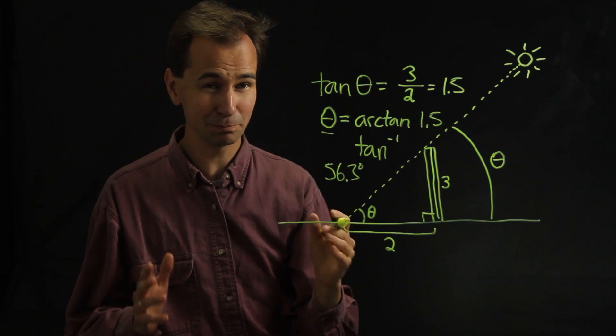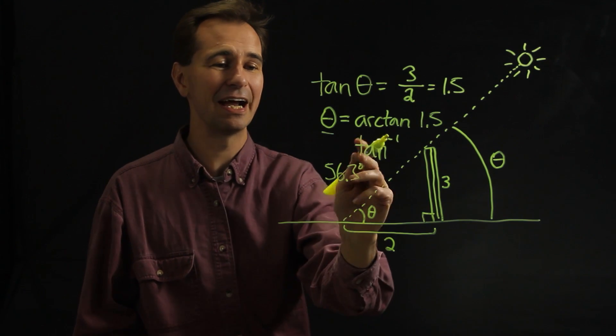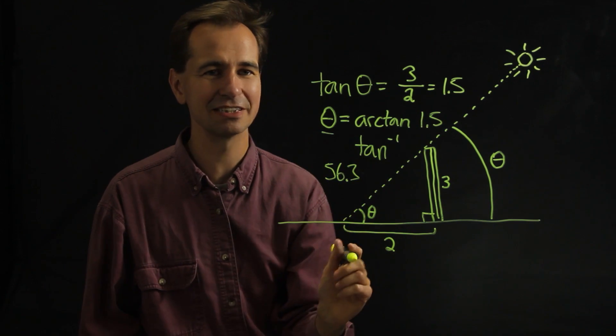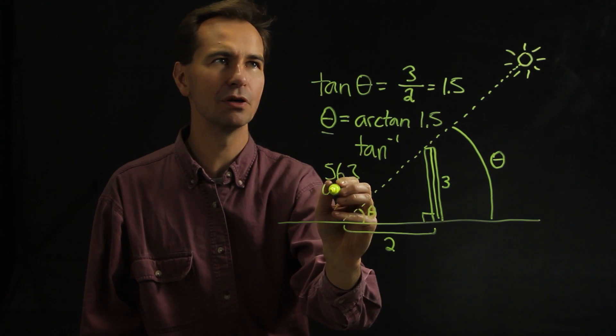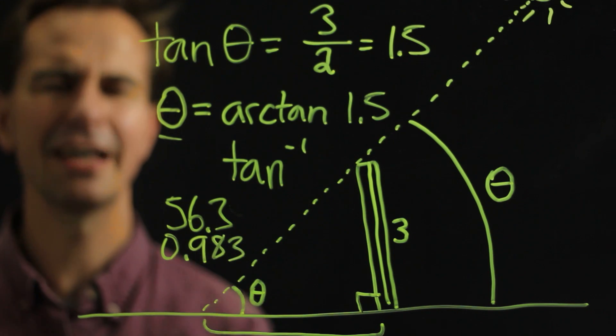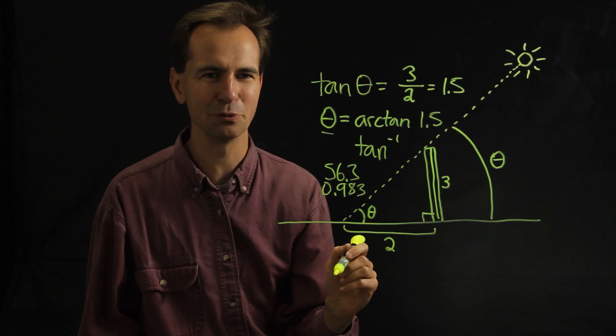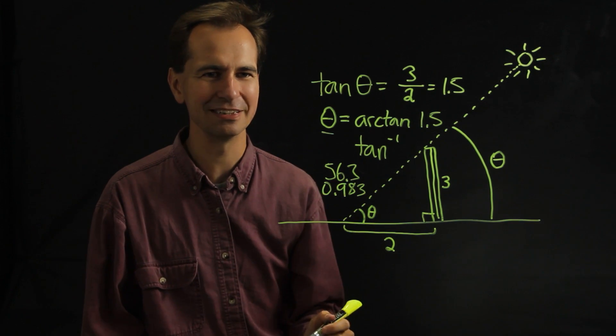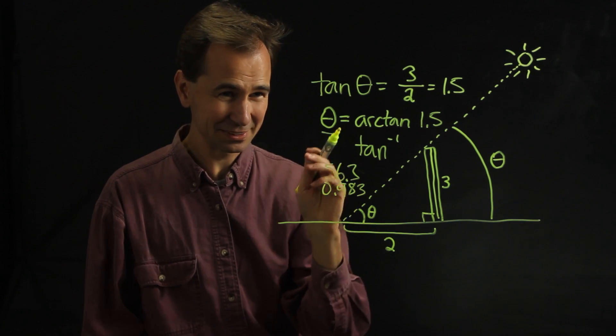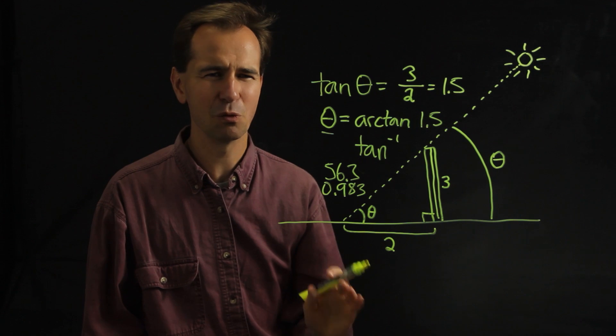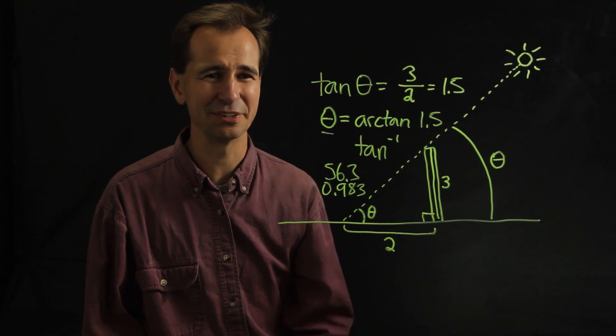Now suppose you punch this into your calculator and instead of getting a number like this, 56.3, you get a number 0.983. That just means that your calculator is in radians mode. So it's giving you that angle in radians instead of the angle in degrees. So when you hit that arc tangent button, you want to make sure your calculator is in whichever mode you want the answer in.